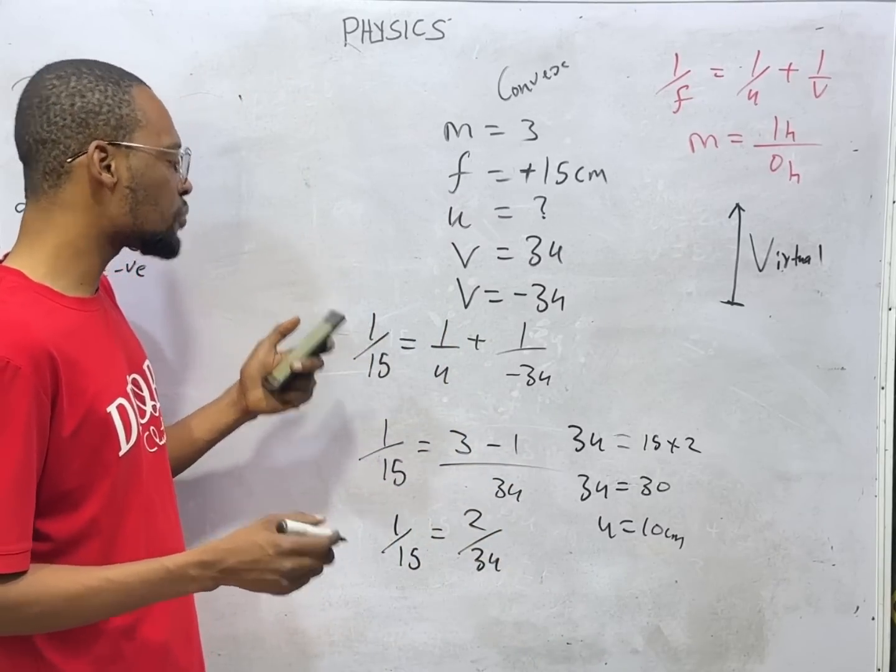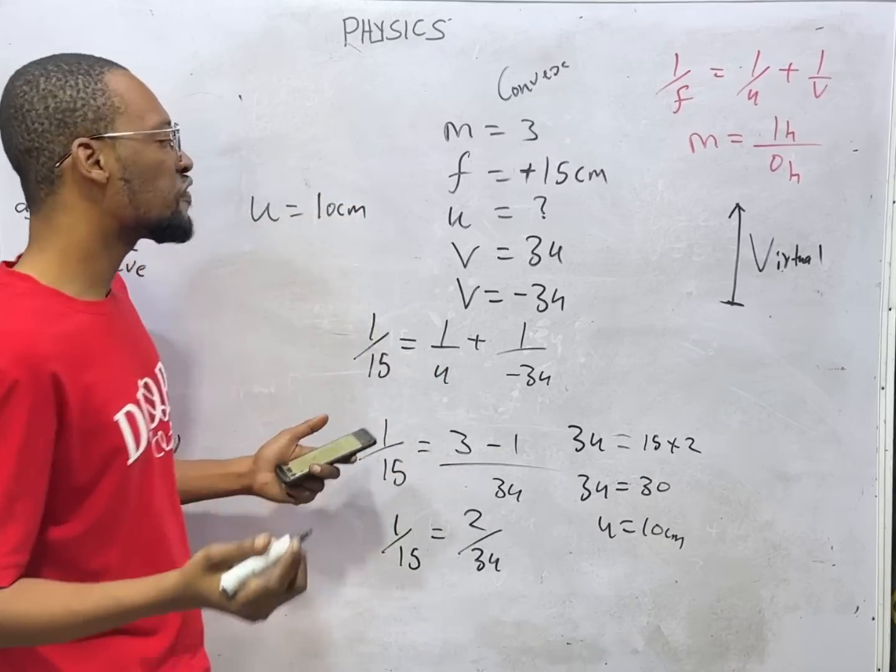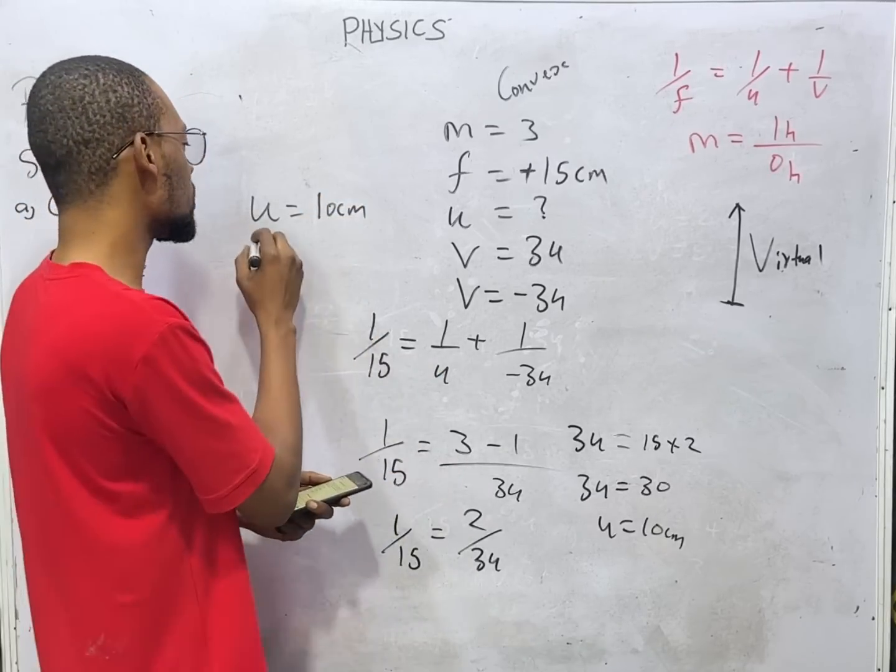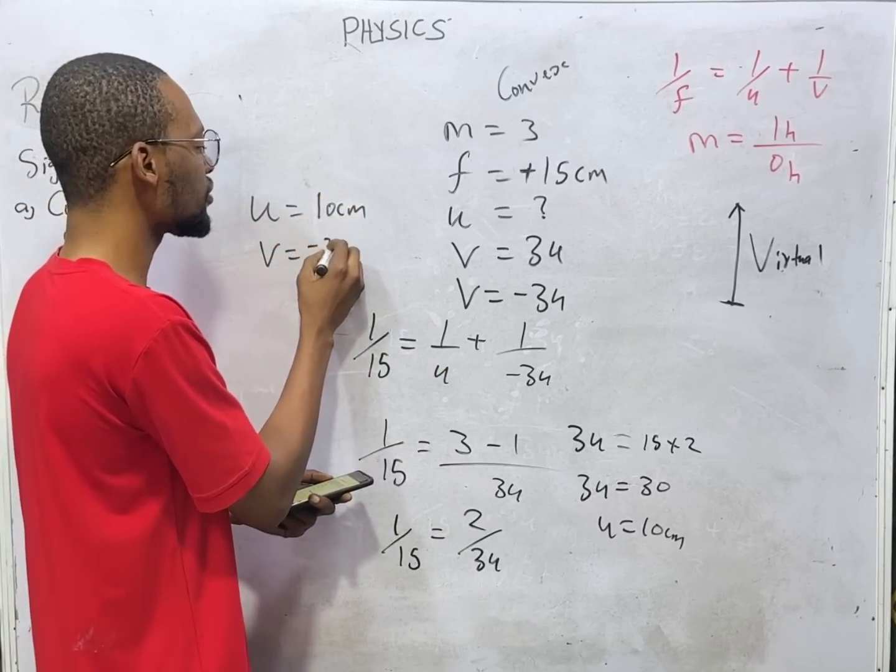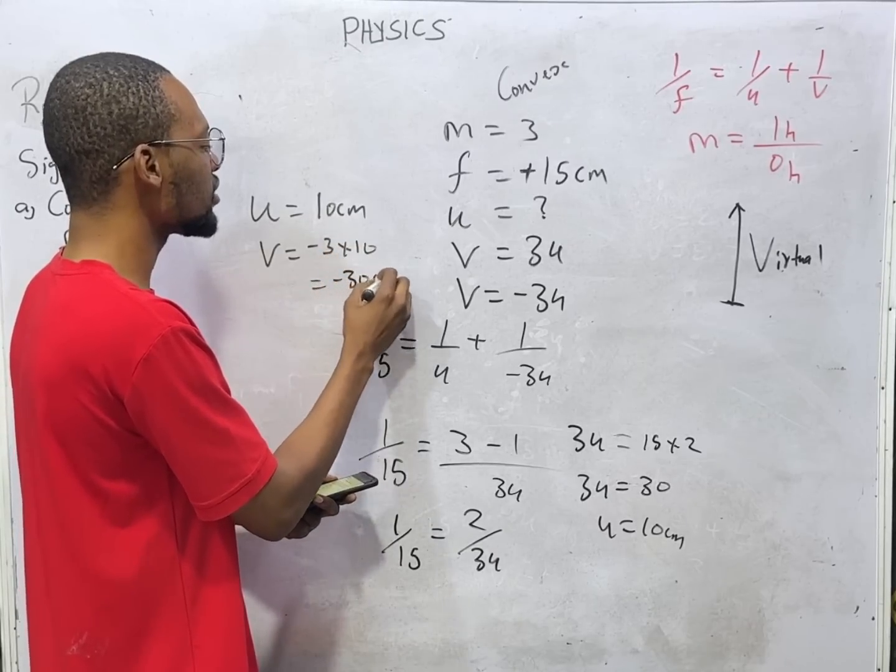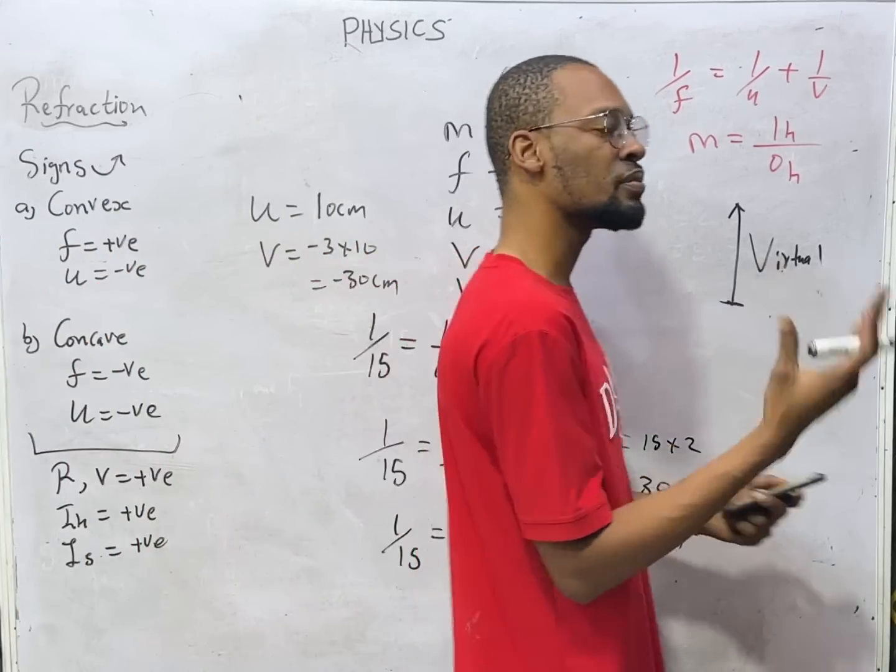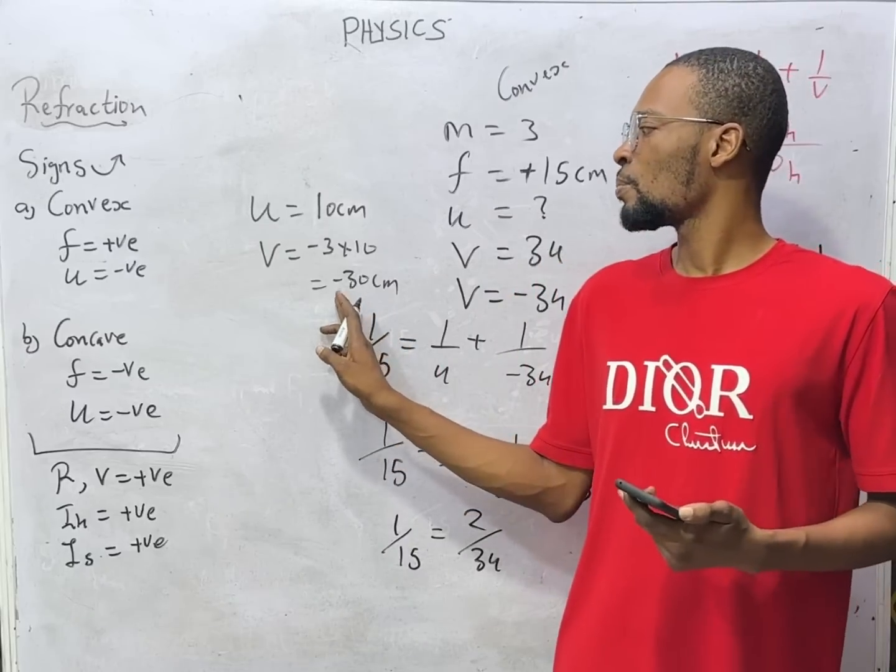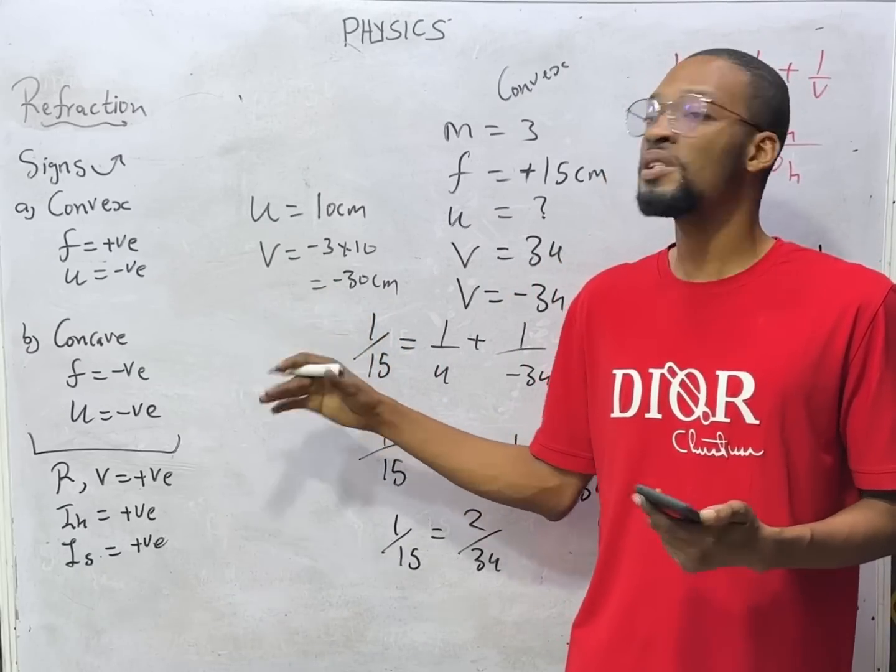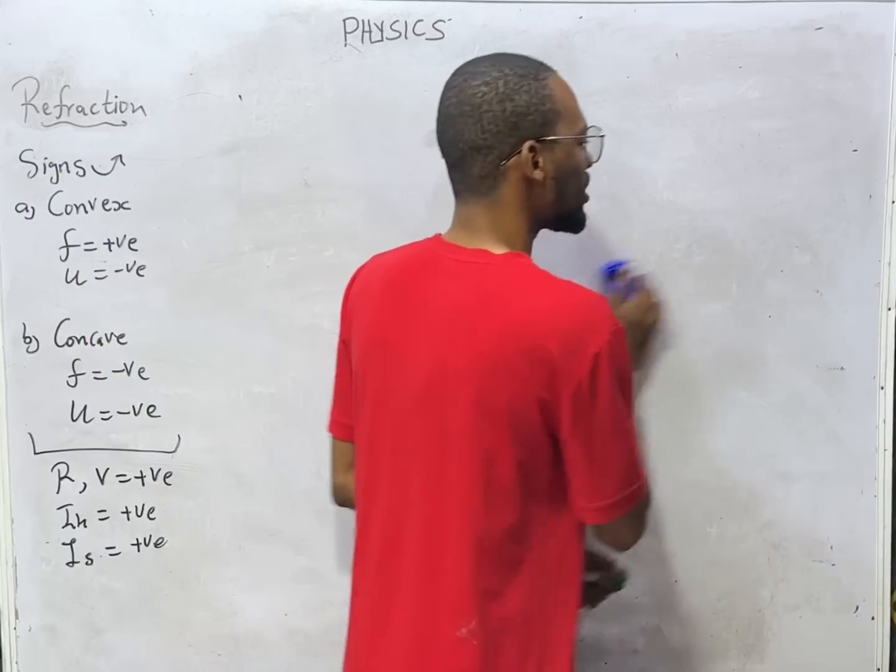What is the object distance? Object distance equals 10 centimeter. If we ask for the image distance it would be minus 3 times 10, that would be 30 centimeter. The negative is basically to tell you that the image is virtual and nothing more.